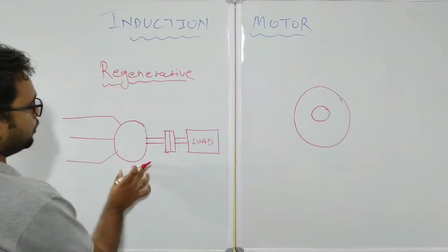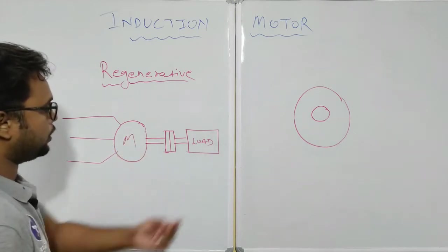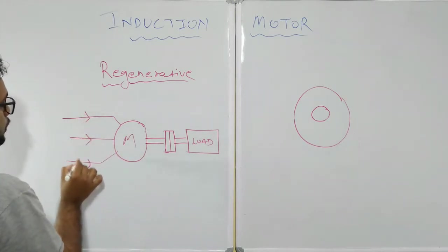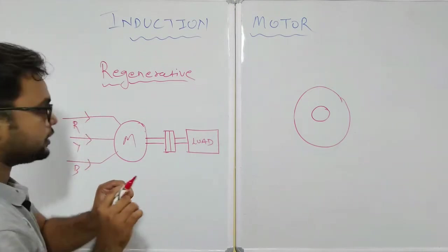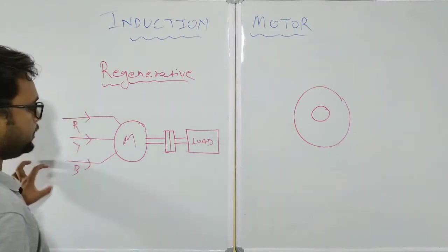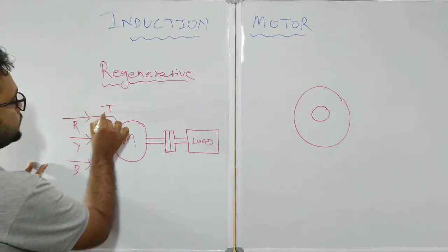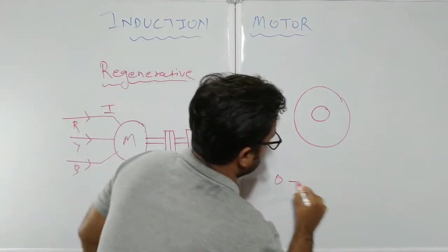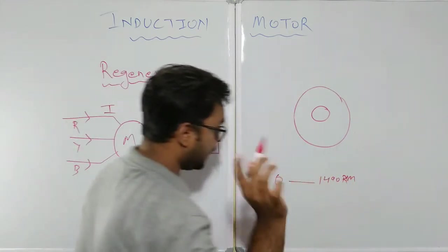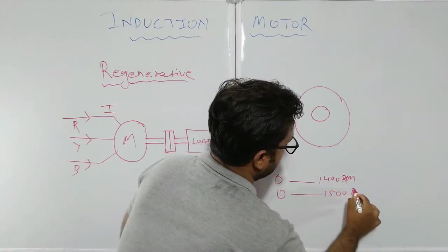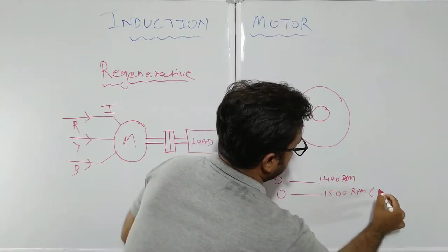Suppose there is a load coupled to a 3-phase induction motor. I have coupled a load with it and I am giving the supply to the motor. The moment we press the start button, the RYB is connected, current flows into the motor, and the motor rotates from 0 to 1490 RPM — that is NR — while the rotating magnetic field goes from 0 to 1500 RPM — that is NS.